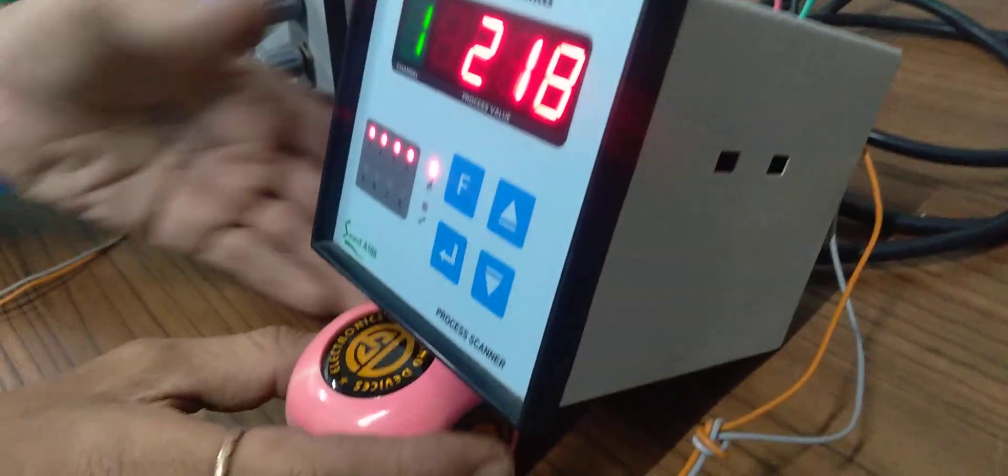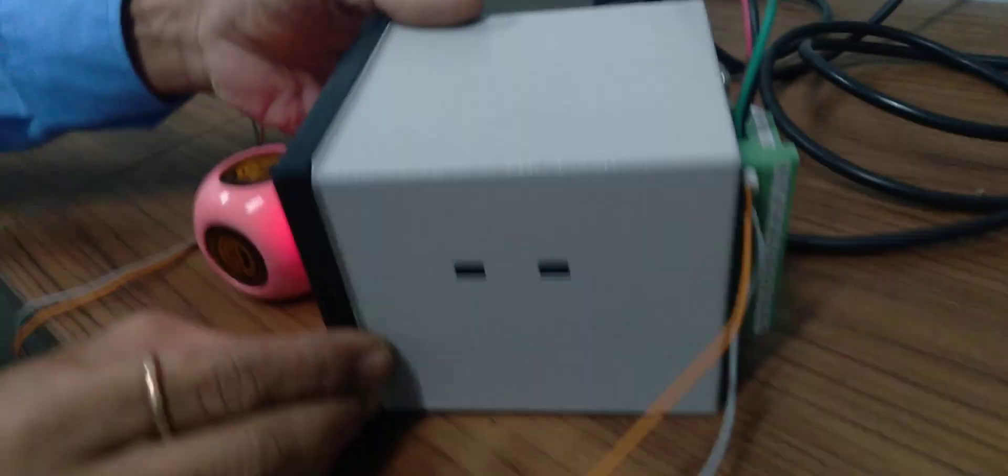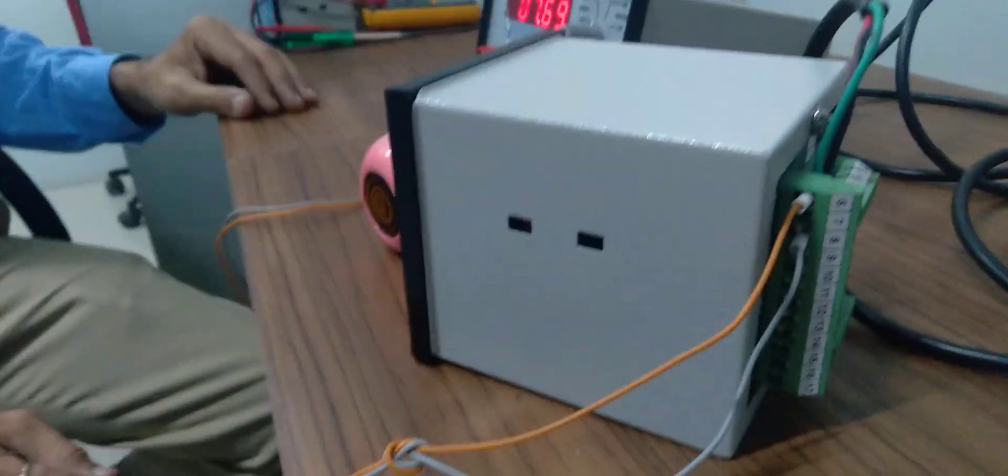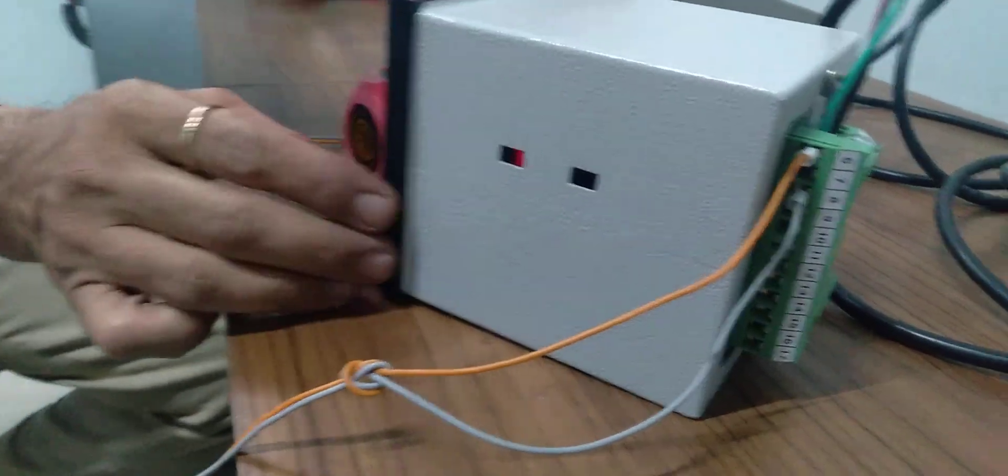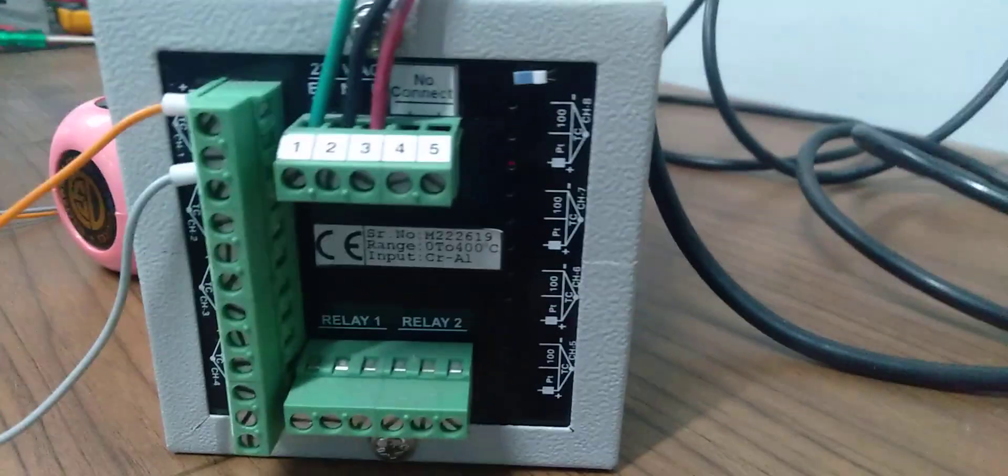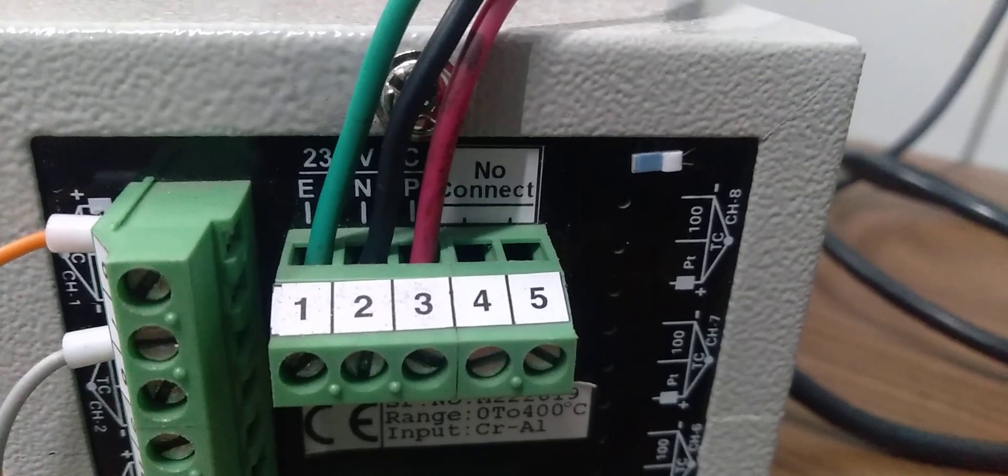At the back of the instrument is the back card. This is a four-channel card where the four channels are connected. The power supply is connected here, 230 volts AC. These two are the relay outputs, relay 1 and relay 2.